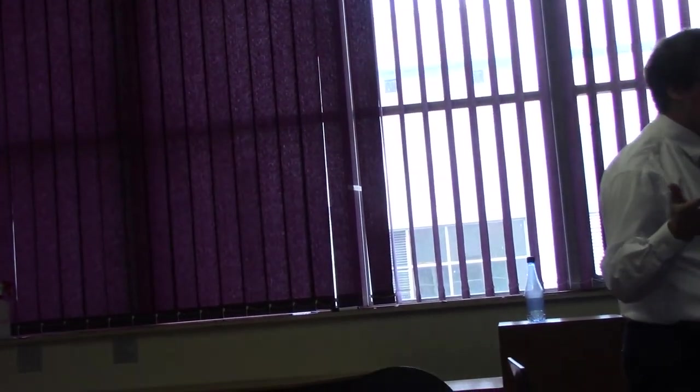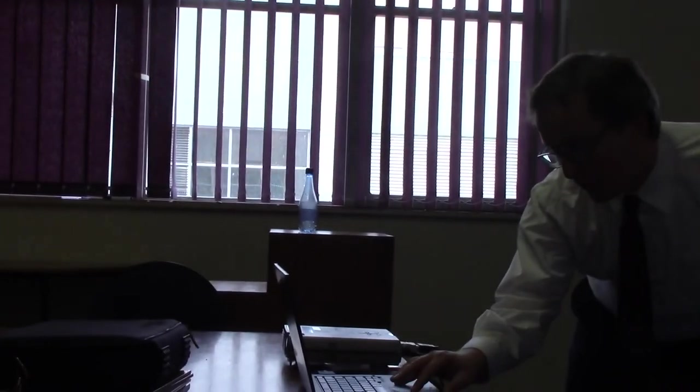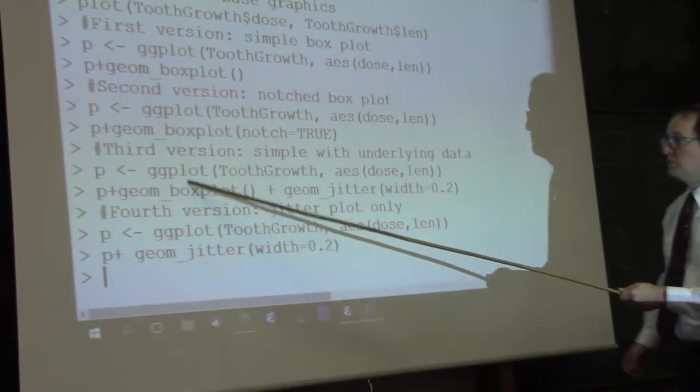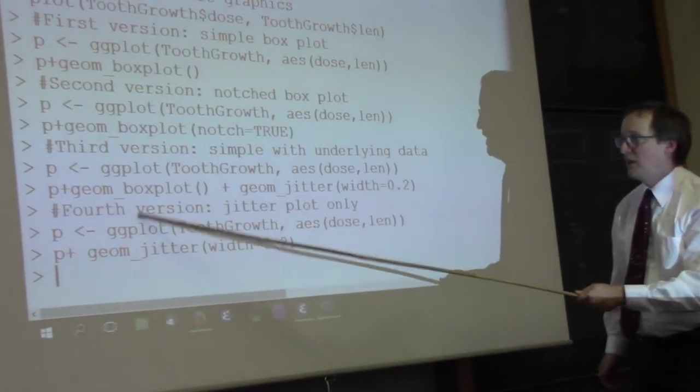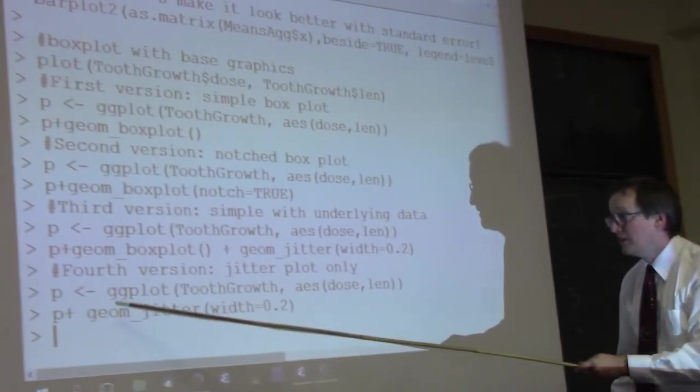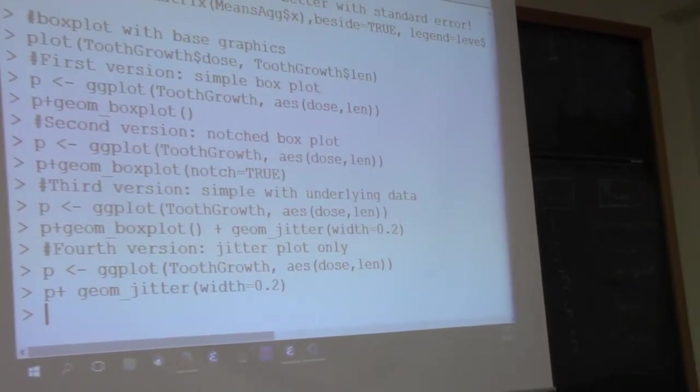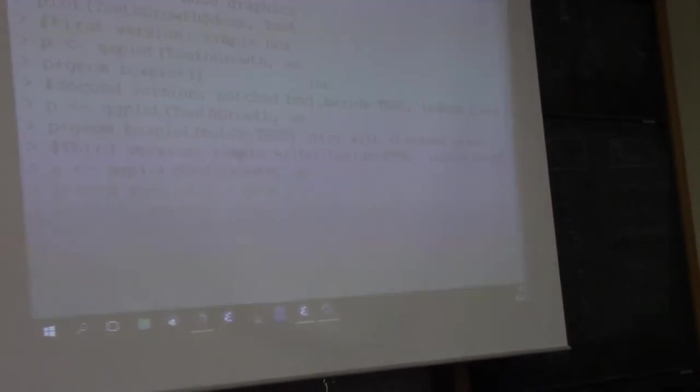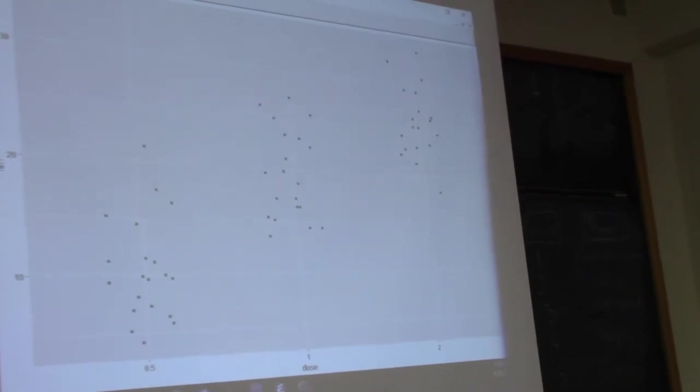So, what if we just get rid of the boxes all together and just do our jitter plot? So, in all of these previous examples with ggplot2, we were giving it a box plot as the first layer that we added on top of this instantiated ggplot. So, this time, though, we're just adding geom jitter. So, if we get rid of the boxes and simply do the points themselves, then we get a distribution like this.